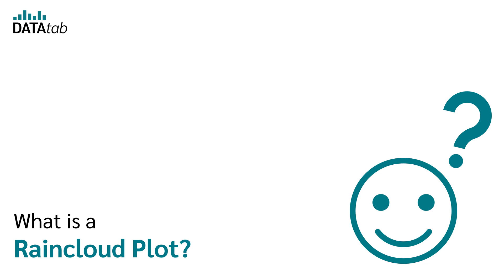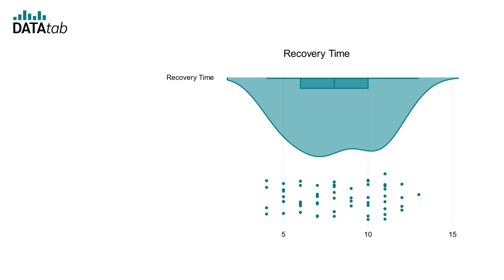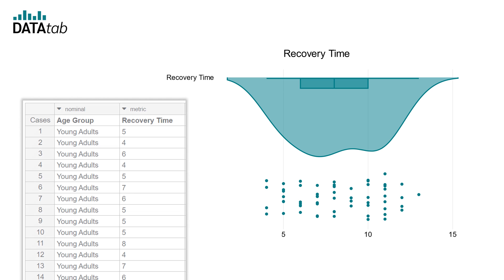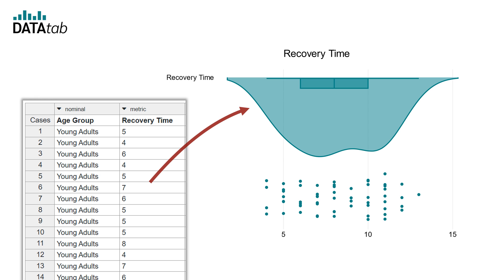What is a raincloud plot? A raincloud plot is a data visualization tool that provides a comprehensive view of a dataset by combining several plots into one figure.